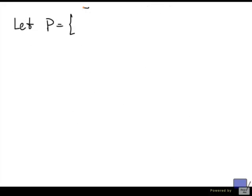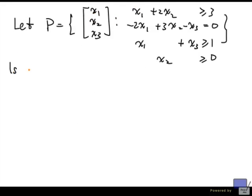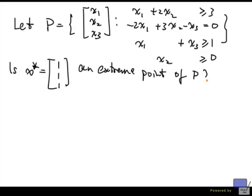Now let's look at another example. This time, let's look at 3 variables. Is x star equal to 1, 1, 1 an extreme point of P? Now notice that this time P is not in quite the form that we want. We have an equality.